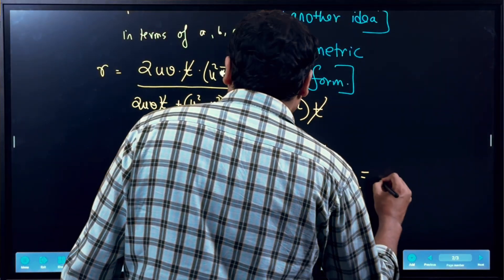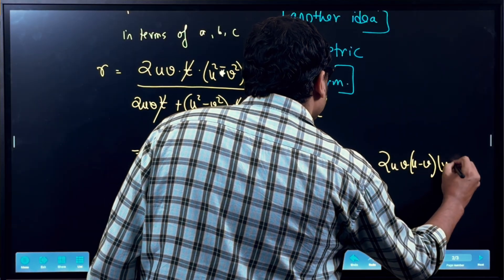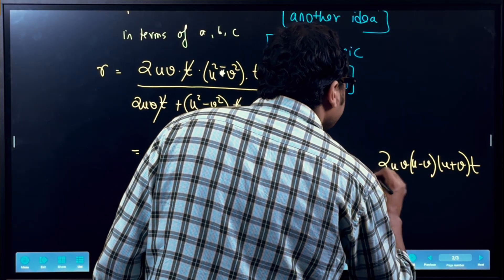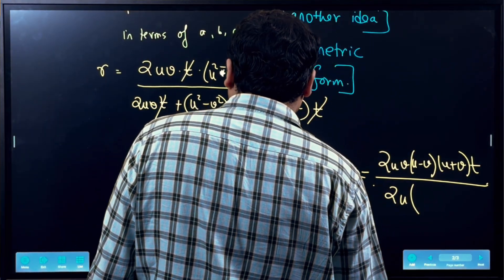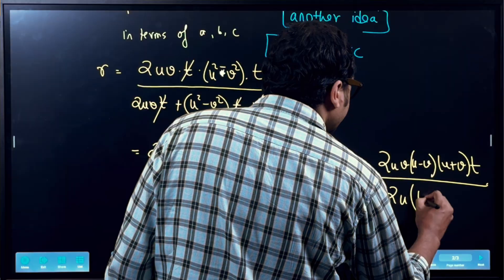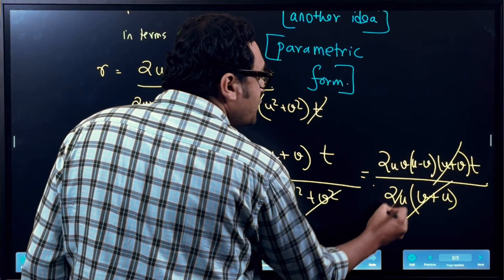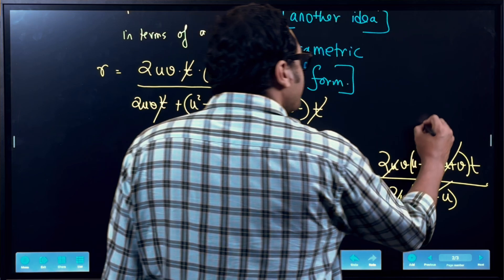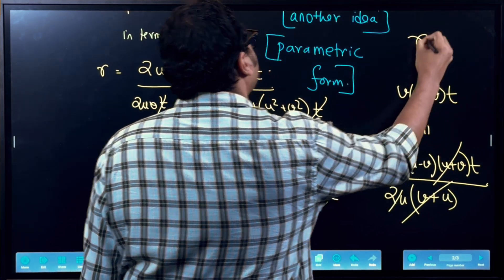And then it's just one line. So it's 2UV U minus V U plus V times T divided by, you can take 2U common, so you have V plus U here, so V plus U. U plus V cancels off, 2U, 2U cancels off, and you are left with V into U minus V into T, which is the value of R.